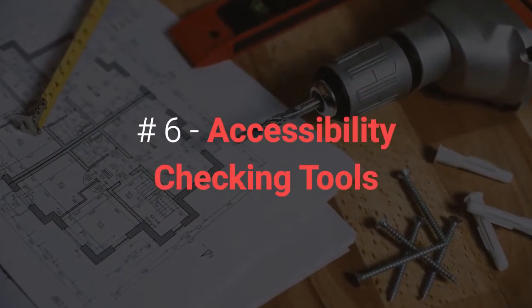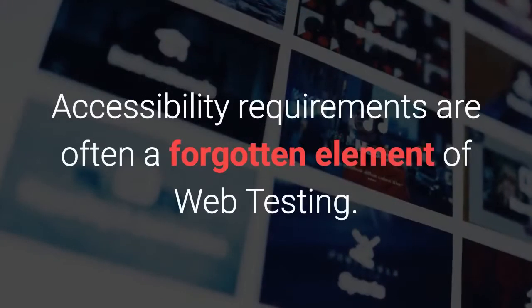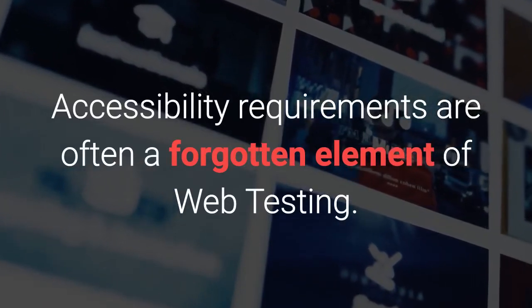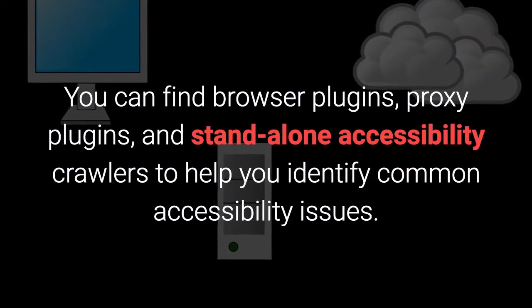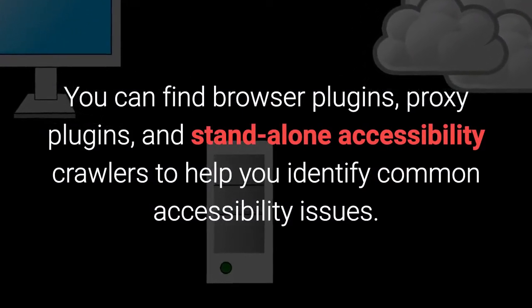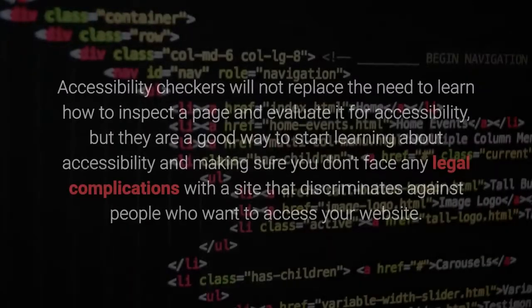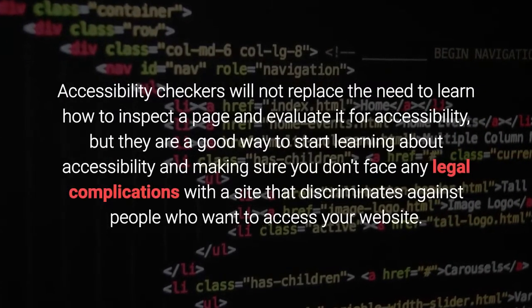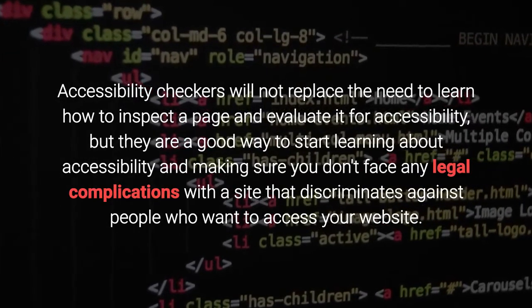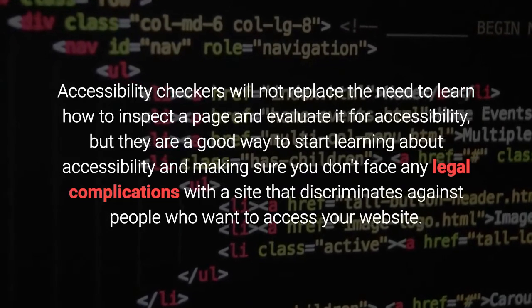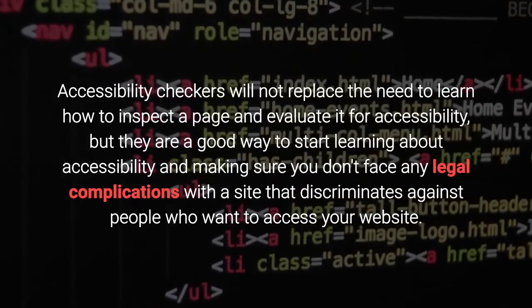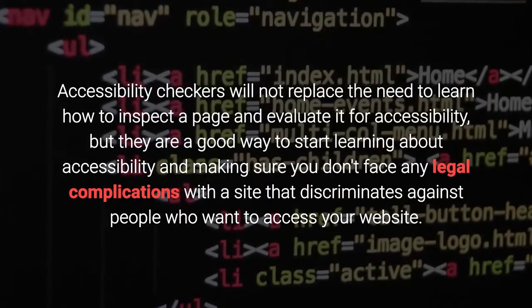Number six: accessibility checking tools. Accessibility requirements are often a forgotten element of web testing. You can find browser plugins, proxy plugins, and standalone accessibility crawlers and tools to help you identify common accessibility issues. Accessibility checkers will not replace the need to learn how to inspect a page and evaluate it for accessibility, but they are a good way to start learning about accessibility and making sure you don't face any legal complications with a site that discriminates against people who want to access your website content.